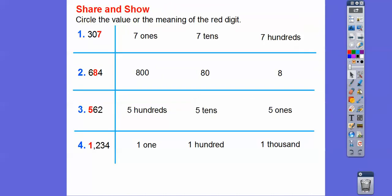So circle the value or the meaning of the red digit. So the first one is 307 and seven is our red digit. So this is in the ones spot. So that would be seven ones right there. So we circle that one. The next one is 684. Eight is in the tens spot. So tens would have one zero. So it would be 80. Eight tens is 80.